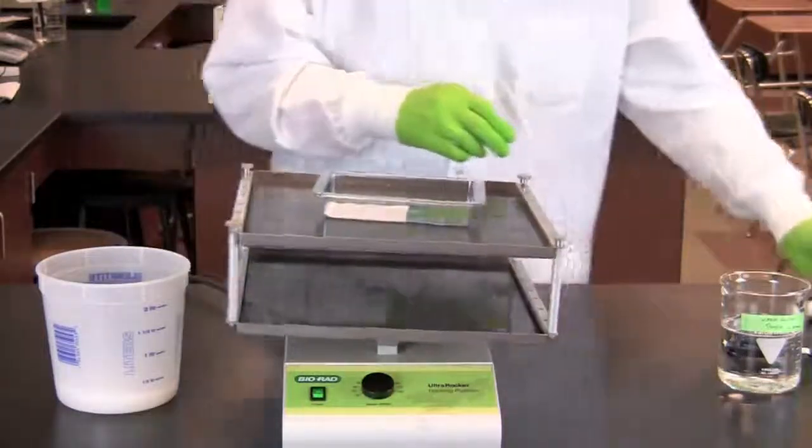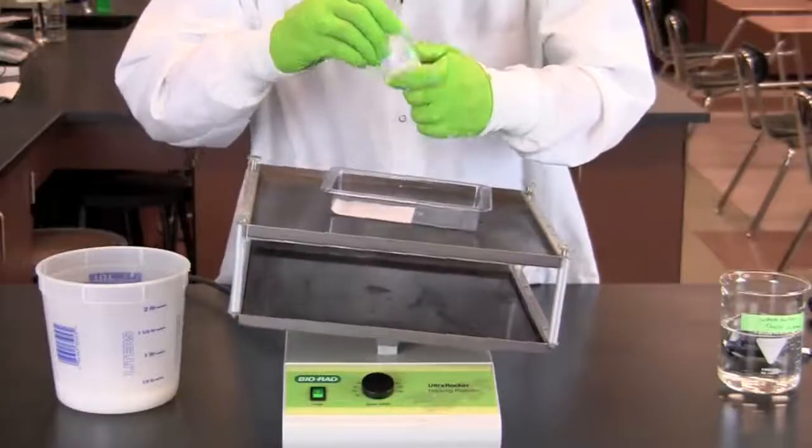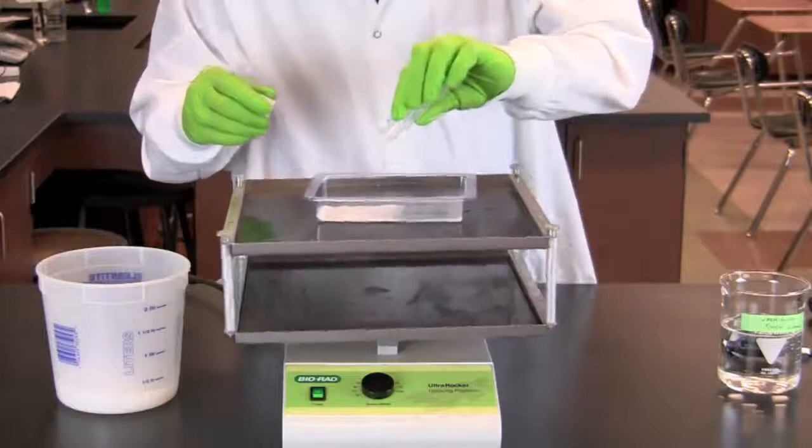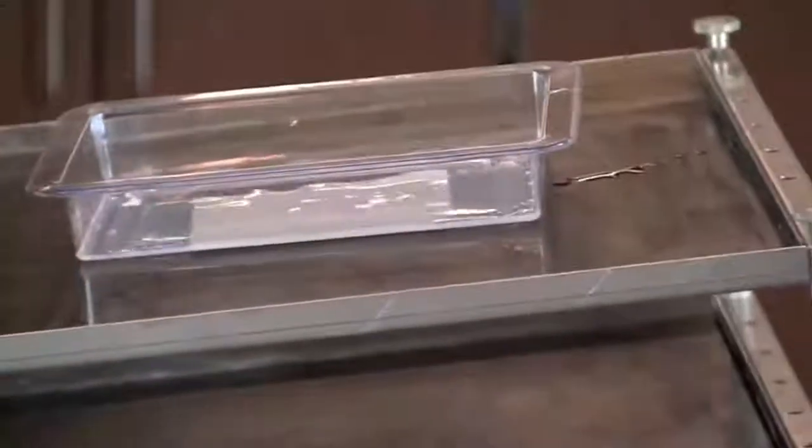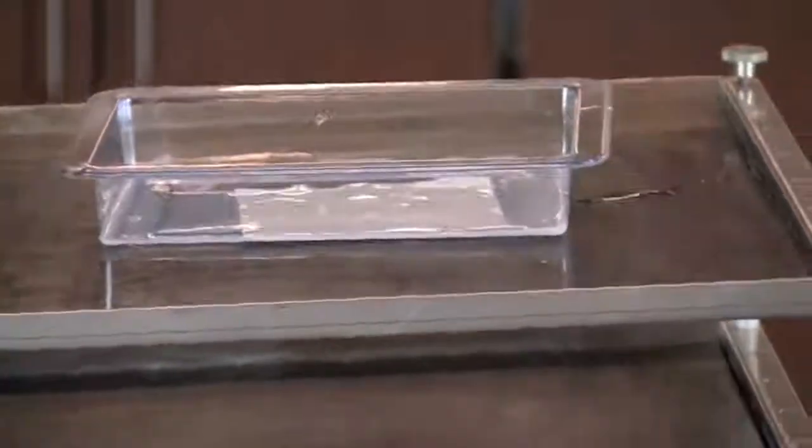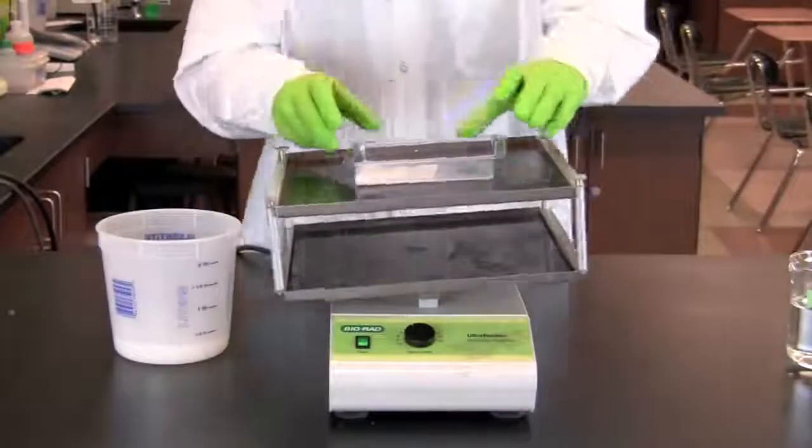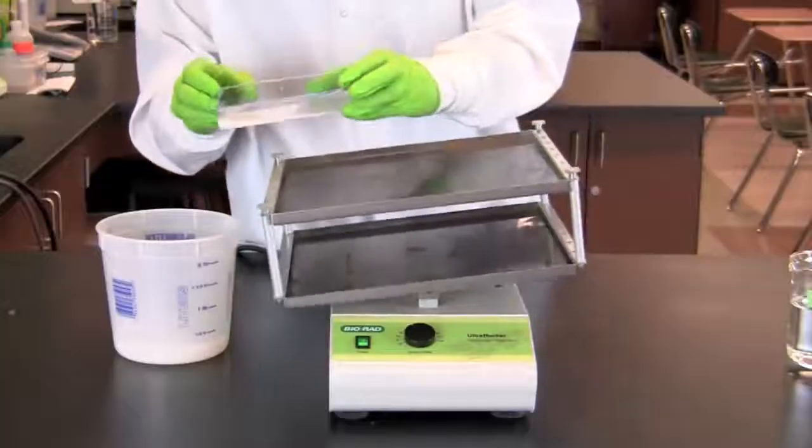Add 10 milliliters of secondary antibody and incubate the membrane for 5 to 15 minutes on the rocking platform at a fast speed. Pour off the secondary antibody.